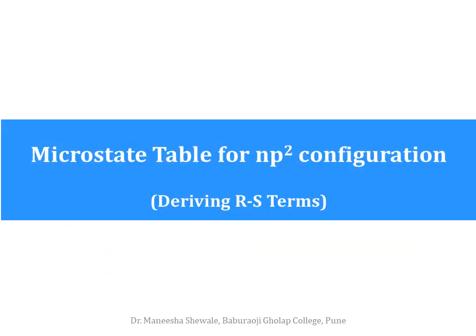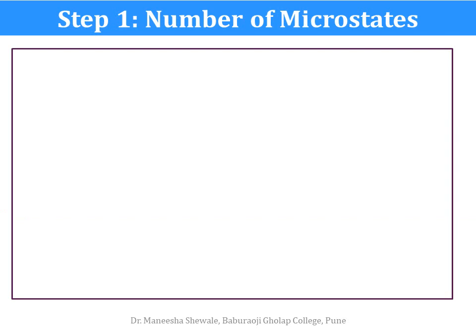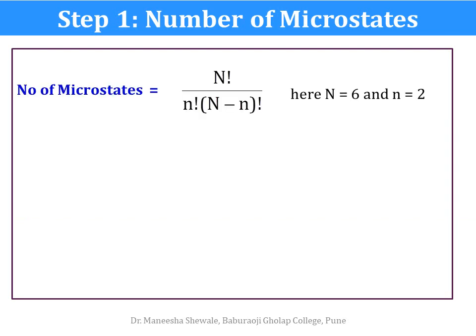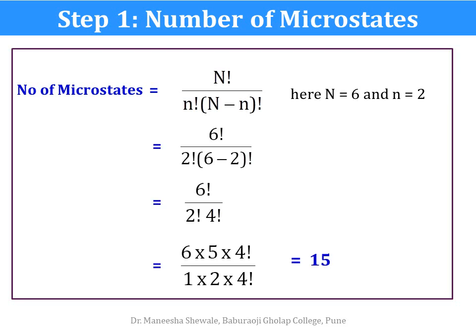We will see how to write down the microstate table for NP2 configuration and derive the RS terms. In the first step, we calculate the number of microstates using the factorial formula. Here, capital N is 6, which is the maximum occupancy of the P subshell, and small n is 2 as per the electronic configuration. By substituting these values, we get the answer as 15. So the number of microstates for NP2 configuration is 15.